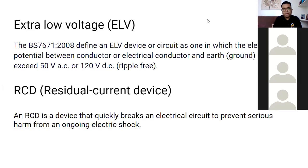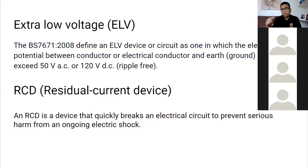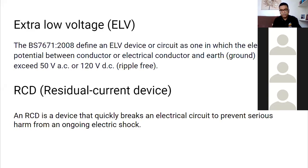Extra low voltage work falls outside the scope of BS 7671, which is why you don't need to be a qualified electrician to do low-current security work. What is an RCD? In a consumer unit you have MCBs (miniature circuit breakers) that protect individual circuits from overloads, and these are protected by an RCD.